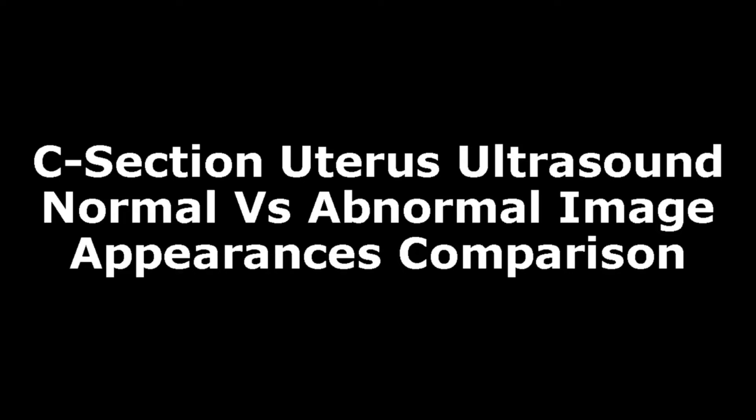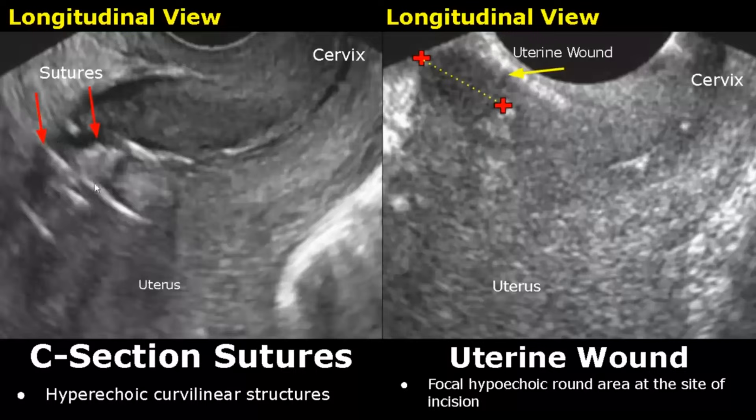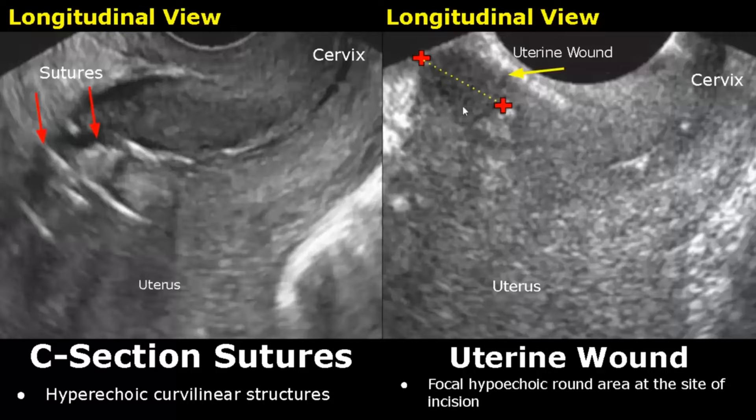Hello everyone, this is Dr. Sam and this video is about C-section uterus ultrasound. These are longitudinal transvaginal images of the uterus after a caesarean section. These curvilinear hyperechoic structures are the sutures, and over here is a uterine wound, appearing as a focal hyperechoic area at the site of the incision.